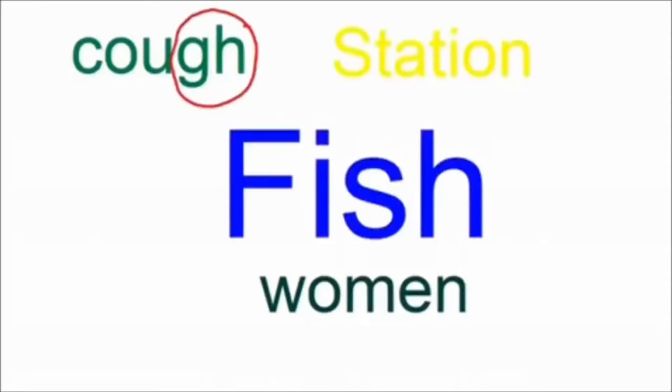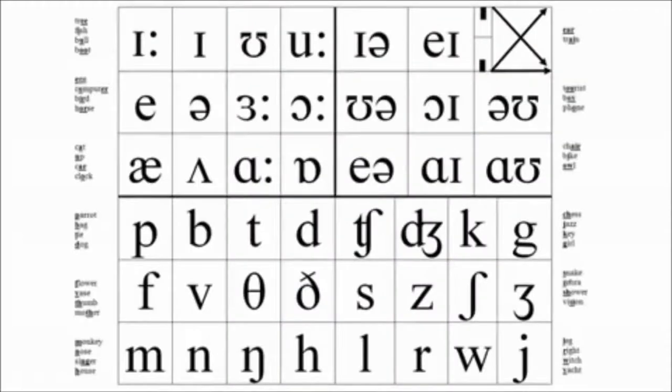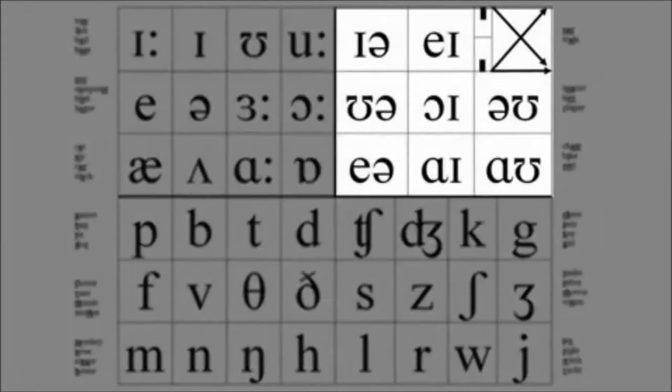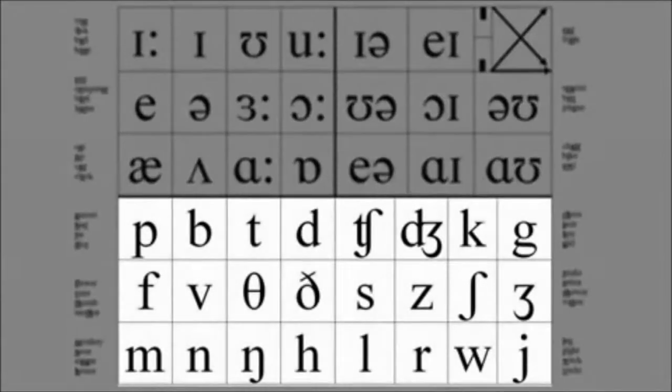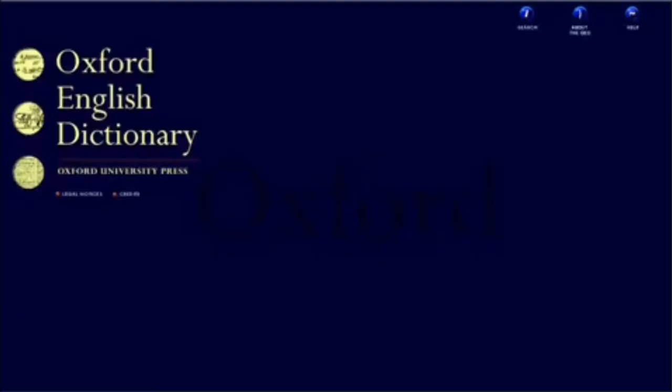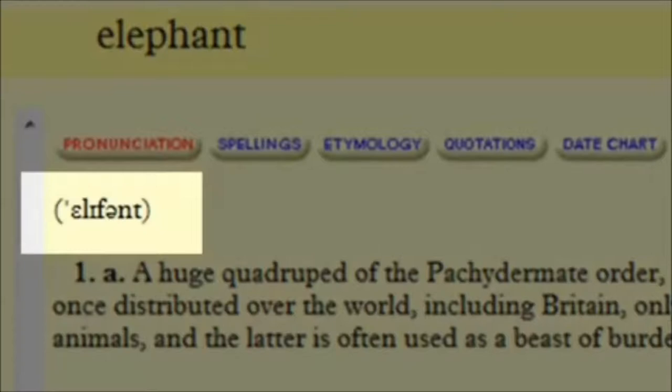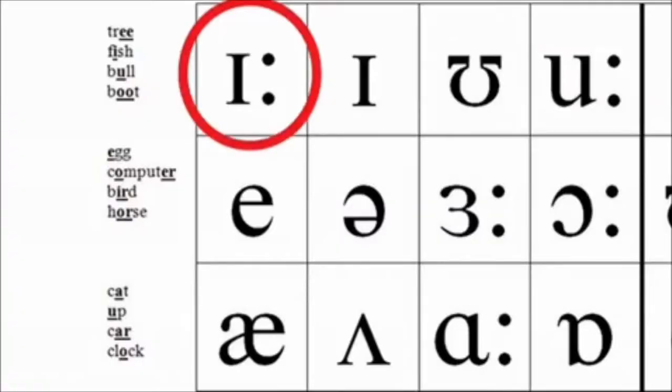The GH in cough gives us f. The O in women gives us i. The TI in station gives us sh. English spelling and pronunciation can be very confusing. That's why phonetics are so important. Here's the phonetic chart. These are the vowel sounds. These are the diphthongs. And these are the consonants. You will see these symbols in dictionaries next to each word. If you really want to improve your pronunciation, you should learn the phonetic alphabet as soon as possible. Listen and repeat.